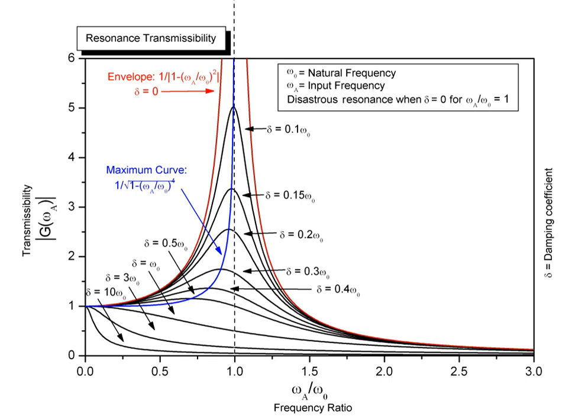Frequencies at which the response amplitude is a relative maximum are also known as resonant frequencies or resonance frequencies of the system. Small periodic forces that are near the intrinsic resonant frequency of the system have the ability to produce large amplitude oscillations in the system due to the storage of vibrational energy.